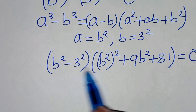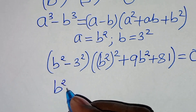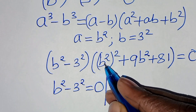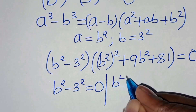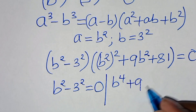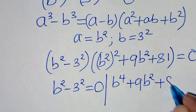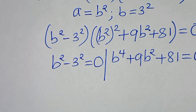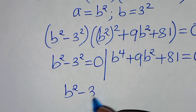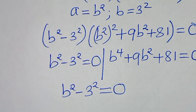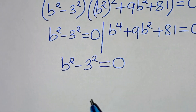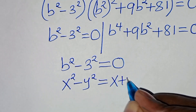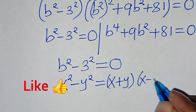Now, we have two parts here. The first part is b squared minus 3 squared, equal to 0. The second part is b to power 2 raised to power 2, which is b to power 4, plus 9b to power 2, then plus 81, equal to 0. The first part, b squared minus 3 squared equal to 0, is the difference of two squares, expressed as x squared minus y squared, which is x plus y times x minus y.